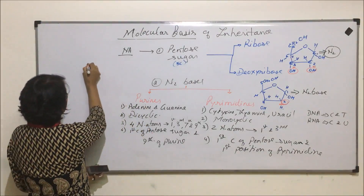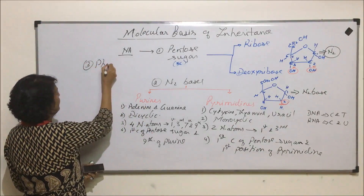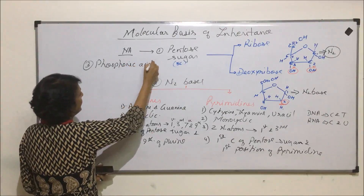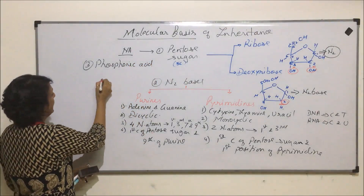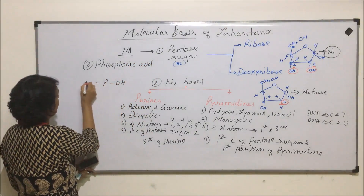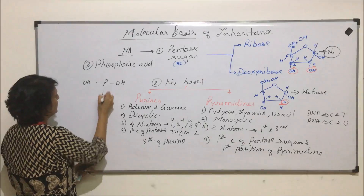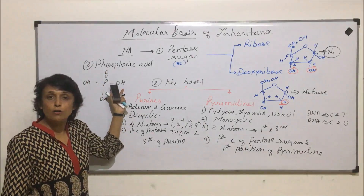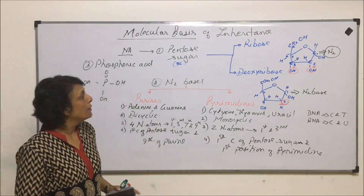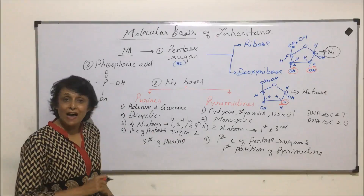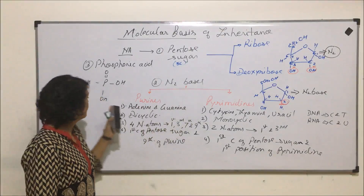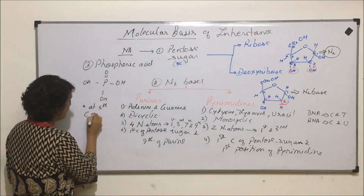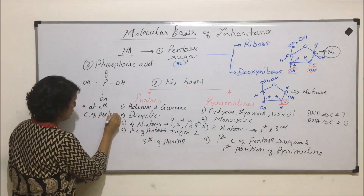Now the third component: phosphoric acid, that is H3PO4. Its structure has phosphorus with three OH groups and one double-bond oxygen. One of the hydroxyl groups will make a bond with the 5th carbon of the pentose sugar. So phosphoric acid is attached at the 5th carbon of the pentose sugar.